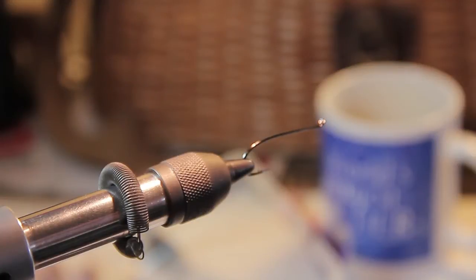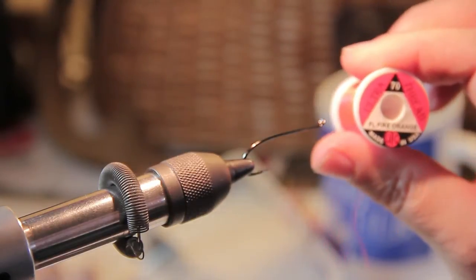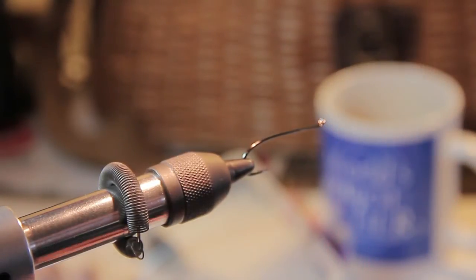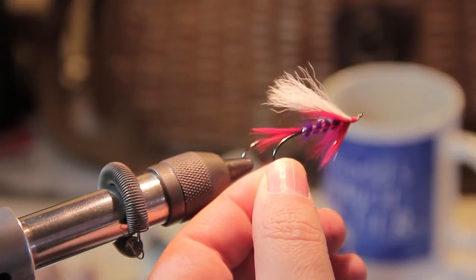The first thing I consider when getting ready to tie a fly is the color or type of thread I'm going to be using. For this fly that I want to tie today, for starters, we're going to tie a classic steelhead general, also known as a Del Cooper.